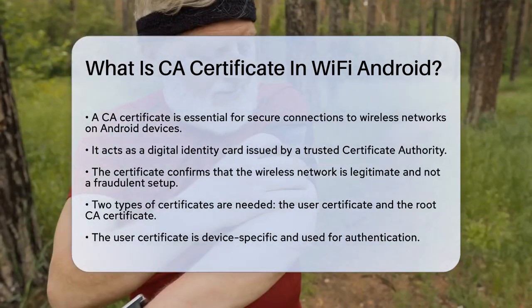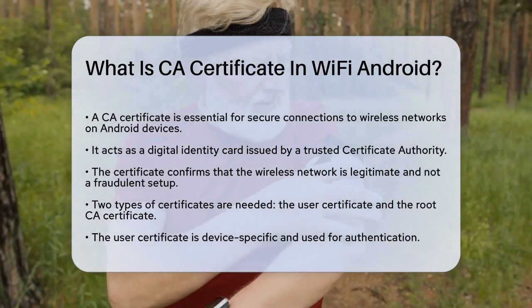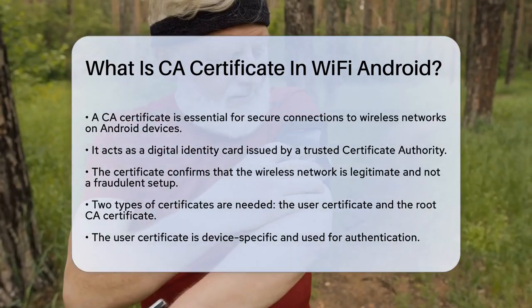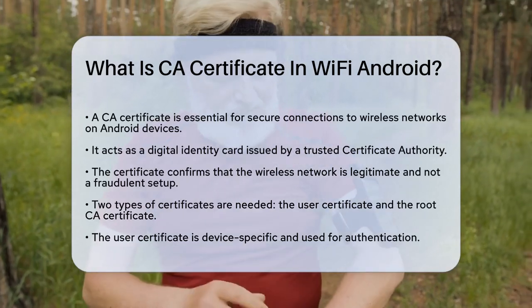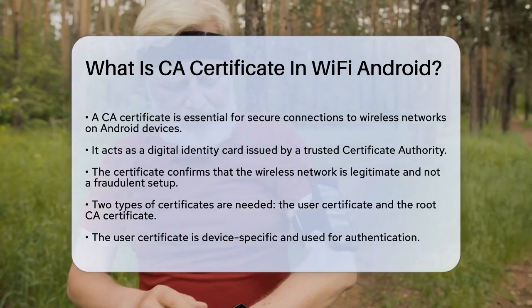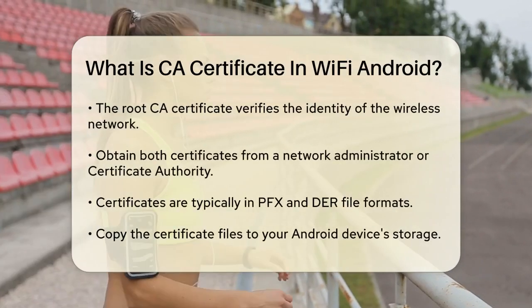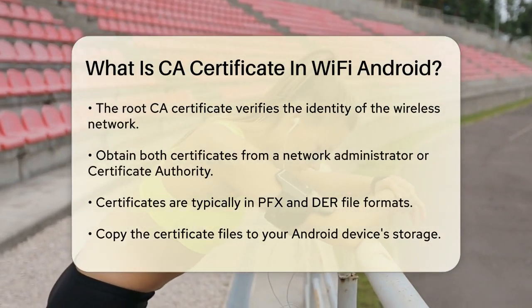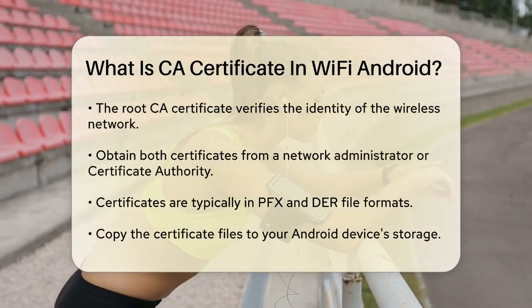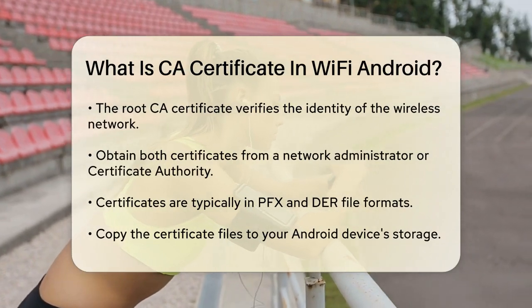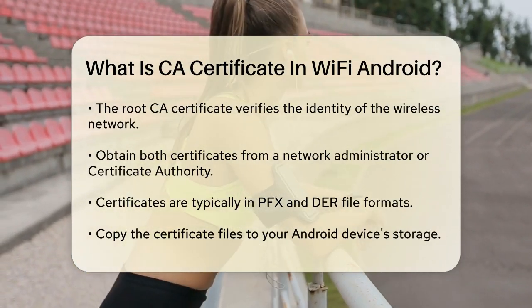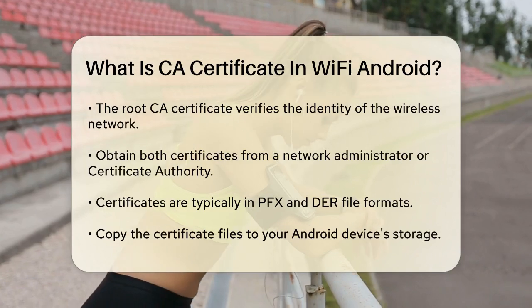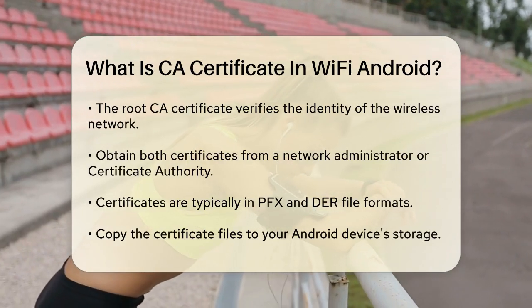This certificate ensures that the wireless network you're connecting to is genuine and not a fake network set up by someone trying to steal your data. To use a CA certificate on your Android device, you need to install two types of certificates: the user certificate and the root CA certificate. The user certificate is specific to your device and is used for authentication, while the root CA certificate verifies the identity of the wireless network.